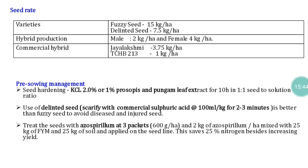Grading is based on weight using a specific gravity separator, which separates seeds based on weight. However, for the specific gravity separator to work, seeds must be free-flowing. When seeds still have lint, they are fuzzy and not free-flowing, so the specific gravity separator cannot be used. But once seeds are delinted through acid scarification, the lint is removed and the seed coat becomes smooth, allowing seeds to move freely. This is the main advantage of the delinting process.